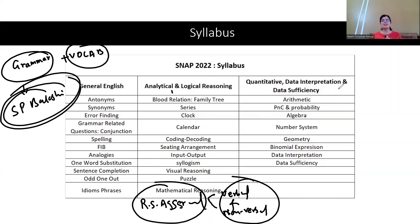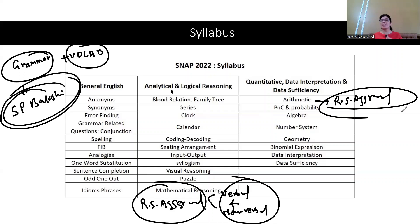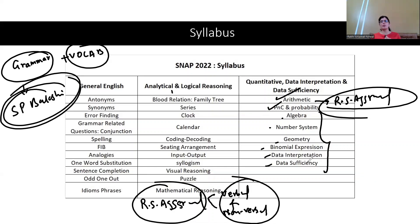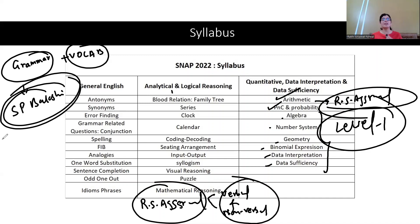For Quantitative Aptitude, RS Aggarwal's competitive exam arithmetic book works well. For PNC and probability, Level 1 questions from RS Aggarwal are sufficient. For algebra, number system, geometry, binomial, data interpretation, and data sufficiency, use whatever book you are already following in the market — just make sure to solve Level 1 questions only.